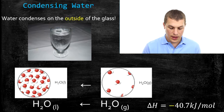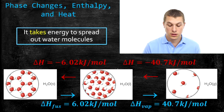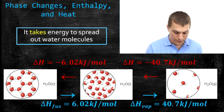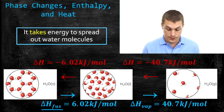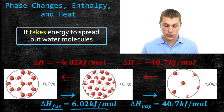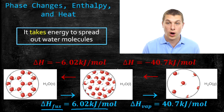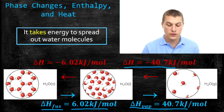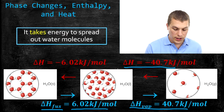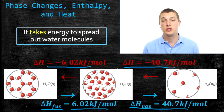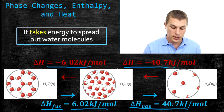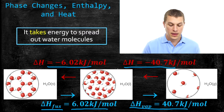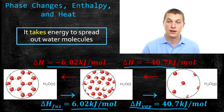Let's take a look at all the different phase changes and the enthalpy changes associated with them. Going from solid to liquid to gas is endothermic — it takes energy. The enthalpy of fusion, the energy needed to melt ice, is 6.02 kilojoules per mole. Going in the opposite direction — from gas to liquid to solid — is exothermic. Condensing gives off 40.7 kJ/mol; freezing also gives off energy because you're letting water molecules come closer together. This is really important to remember when calculating heat absorbed or released during phase changes.